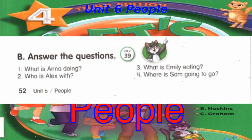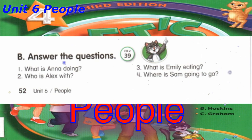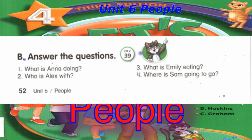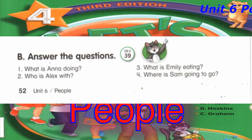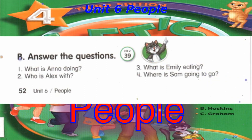Track 39, B. Answer the questions. Number 1: What is Anna doing? Number 2: Who is Alex with? Number 3: What is Emily eating? Number 4: Where is Sam going to go?